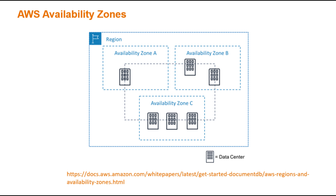If one availability zone is affected by an outage, your application can continue running in the other availability zones, ensuring high availability and resilience. This is an important concept to understand for the AWS Certified Cloud Practitioner Exam, as it demonstrates how you can build highly available and fault-tolerant applications on the AWS cloud.